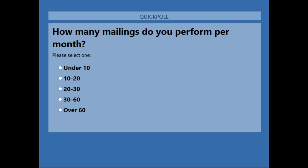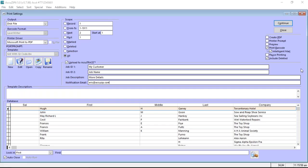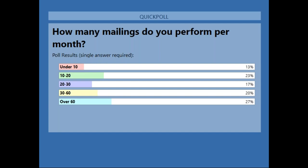It looks like everybody's being very interactive — we've got about 80% voted. The majority is over 60. You guys are doing a lot of mail — this is phenomenal! Right around 50% mail at least 30 mailings a month.